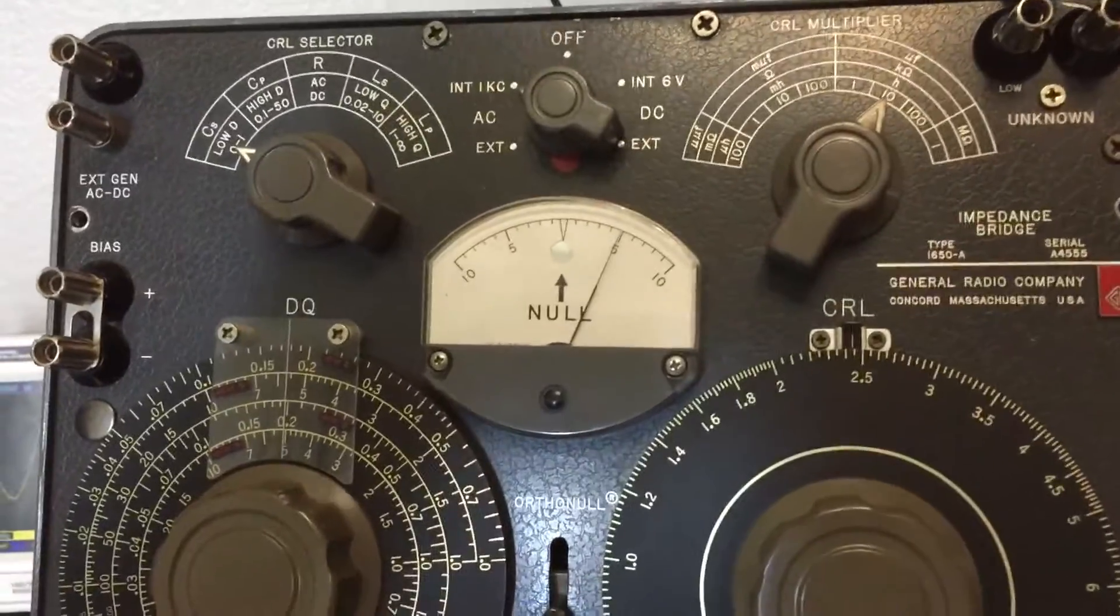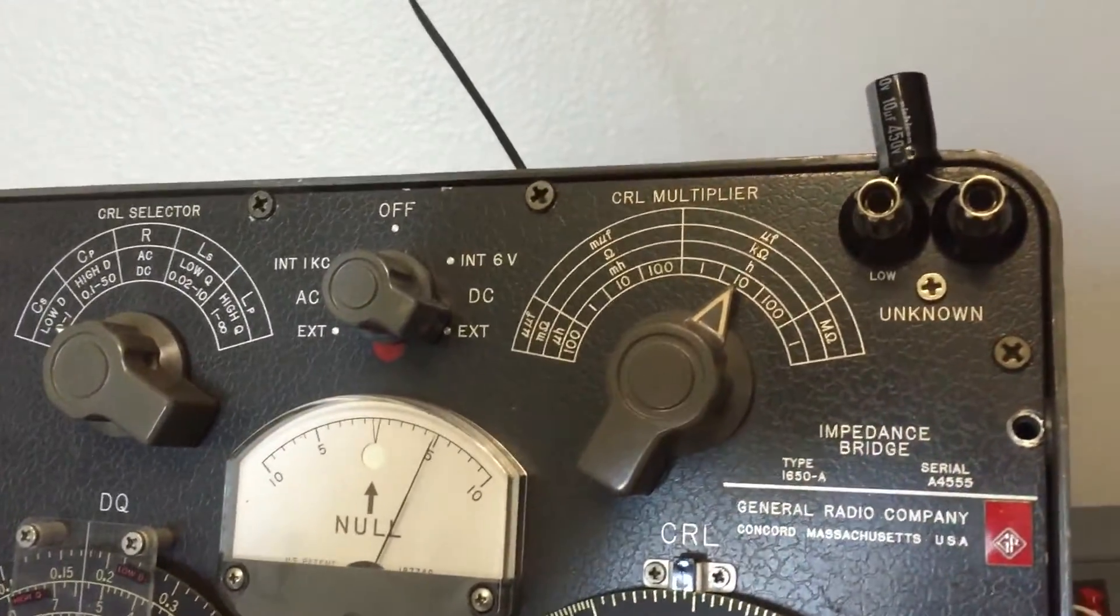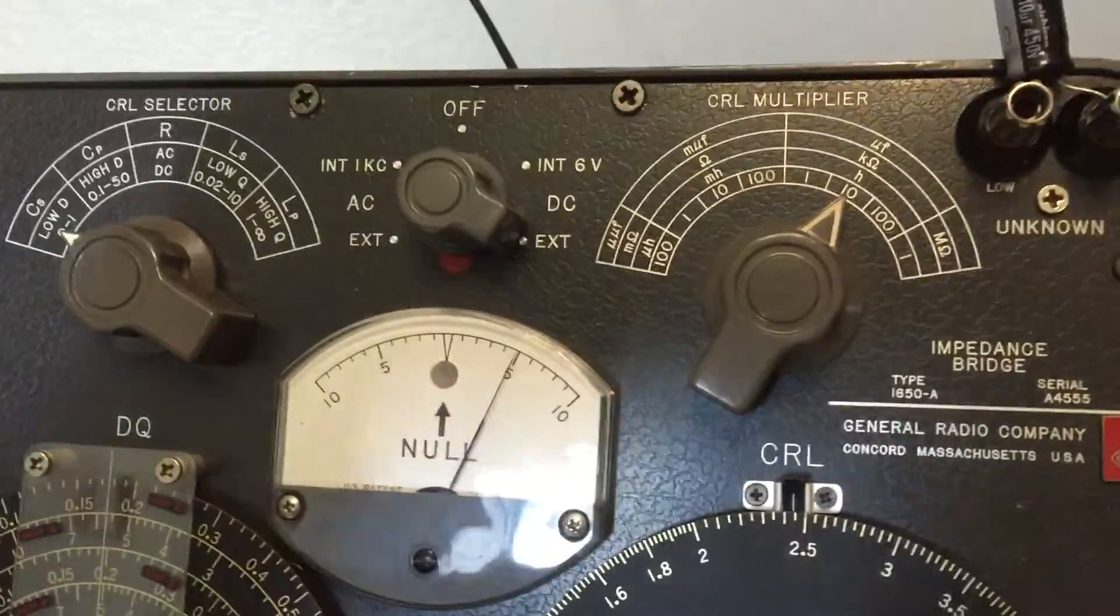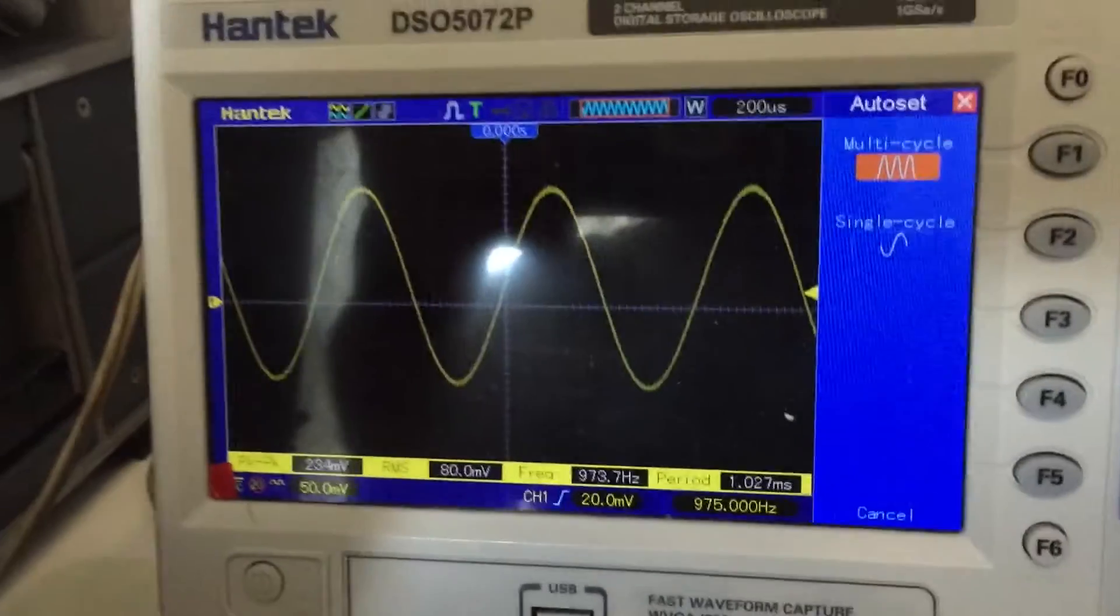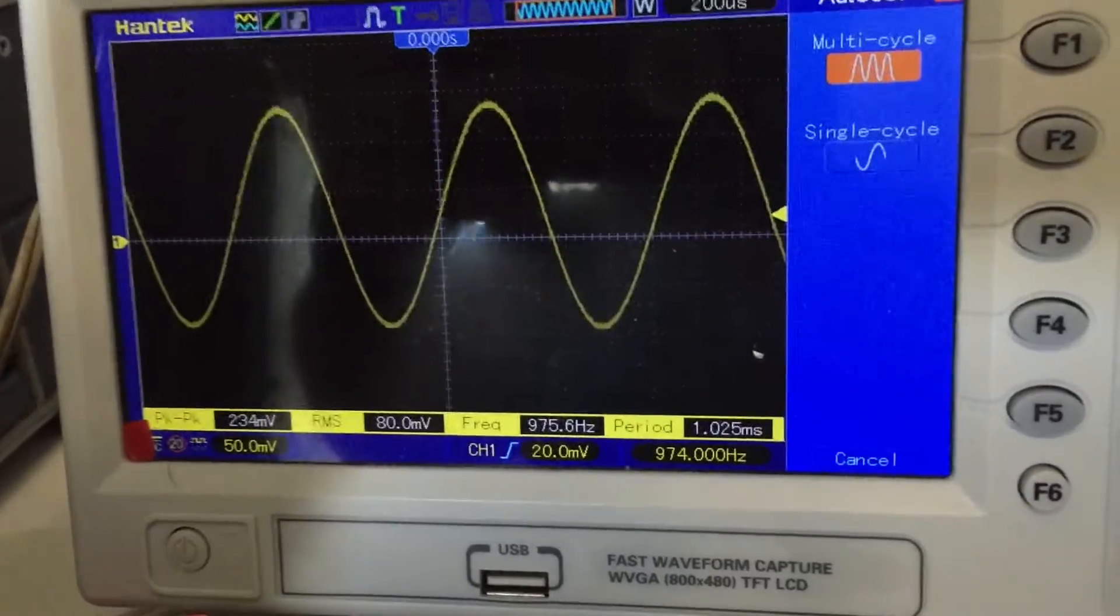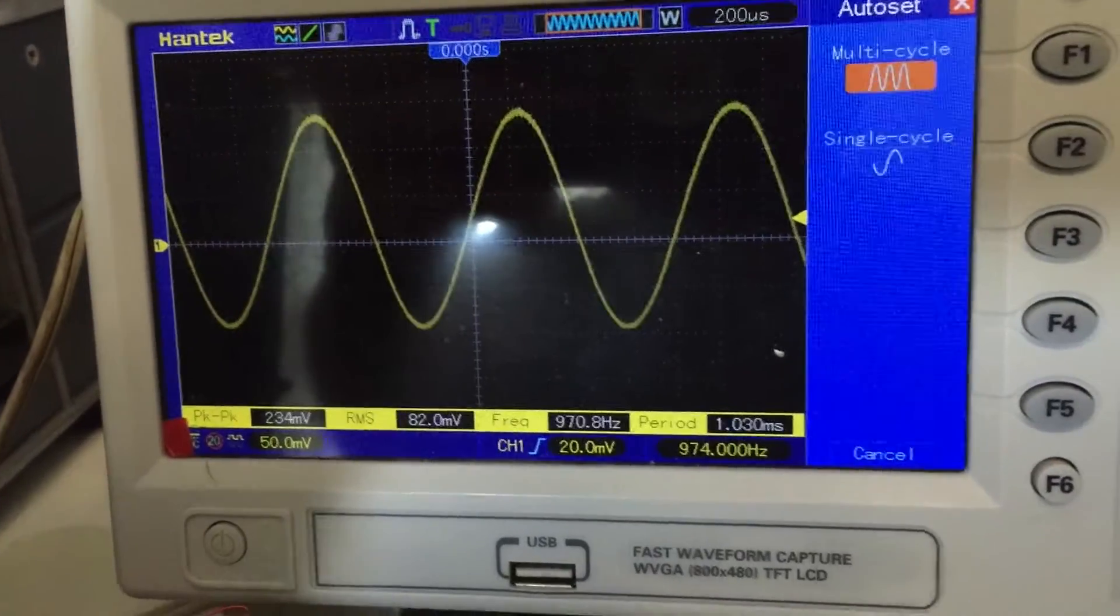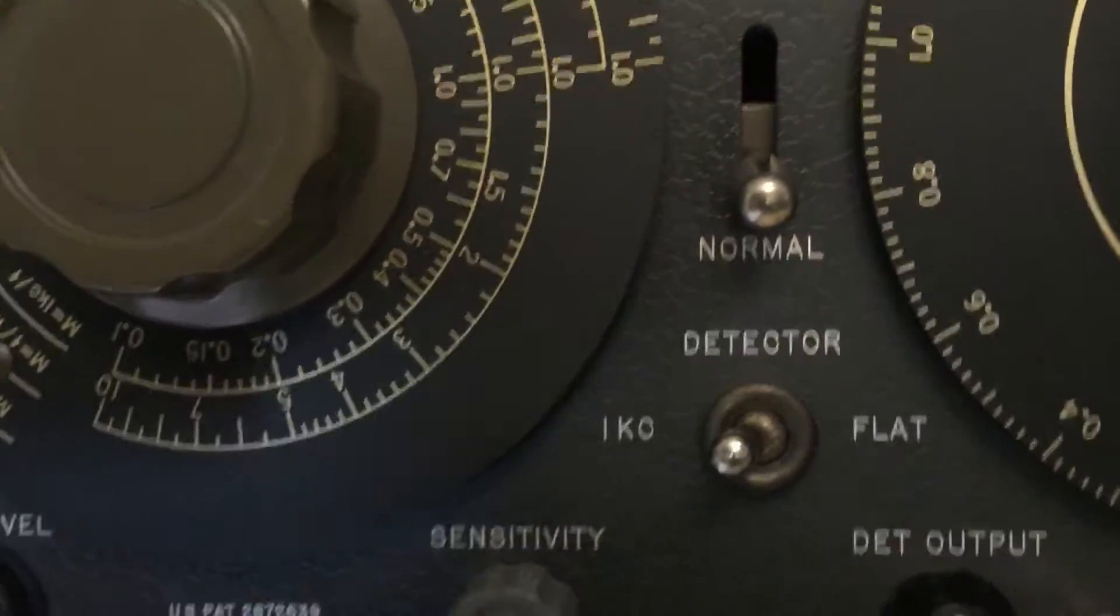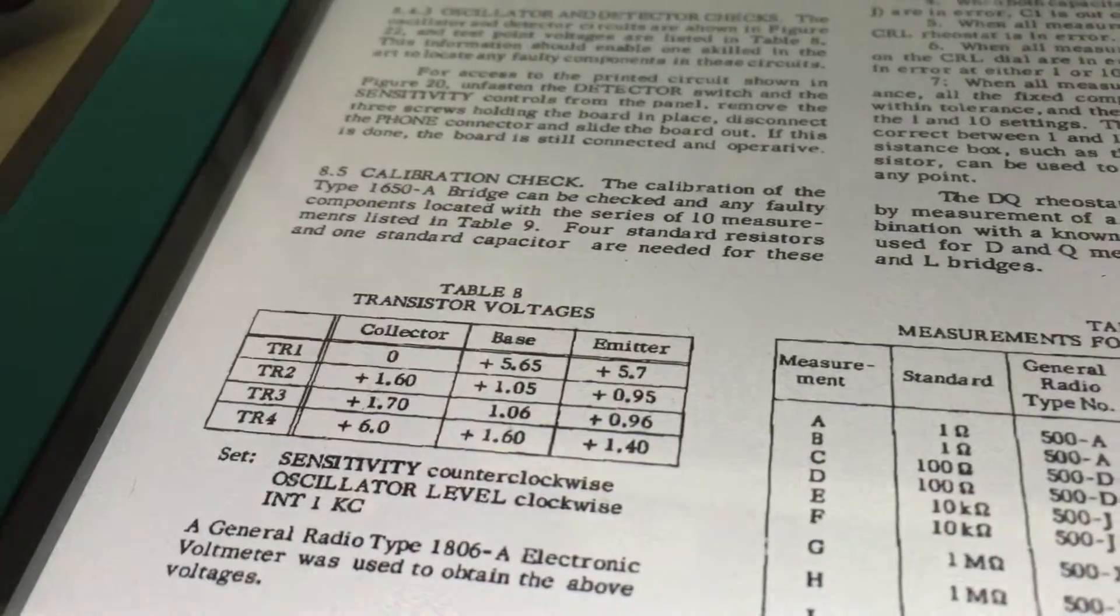I've got a problem with this GENRAB 1650. It should be evident with this detuned 10 microfarad capacitor seen here. The problem is this: looking at the detector output, we see that the AC frequency generated by this unit is 974 and 975 Hertz. We expect to see one kilocycle.